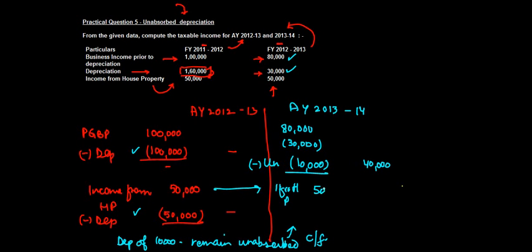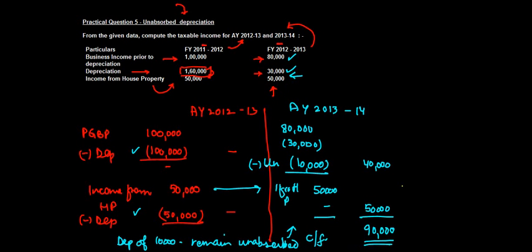Income from house property is fifty thousand. Since there is no more unabsorbed depreciation, nothing is set off against it, and the fifty thousand comes into the outer column. The total income is fifty plus forty, which equals ninety thousand.